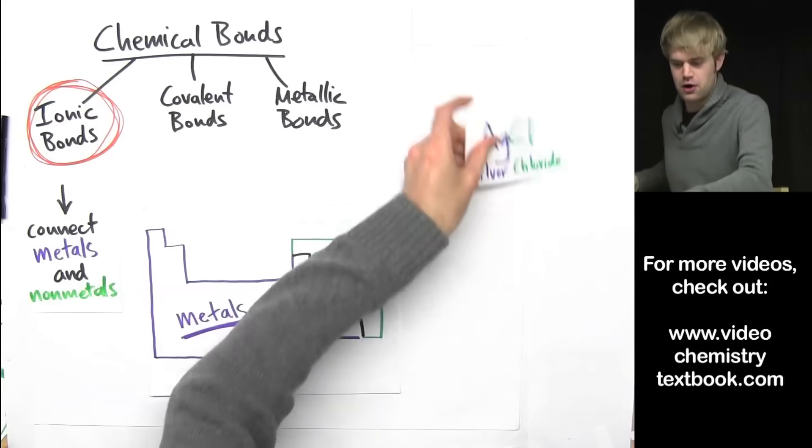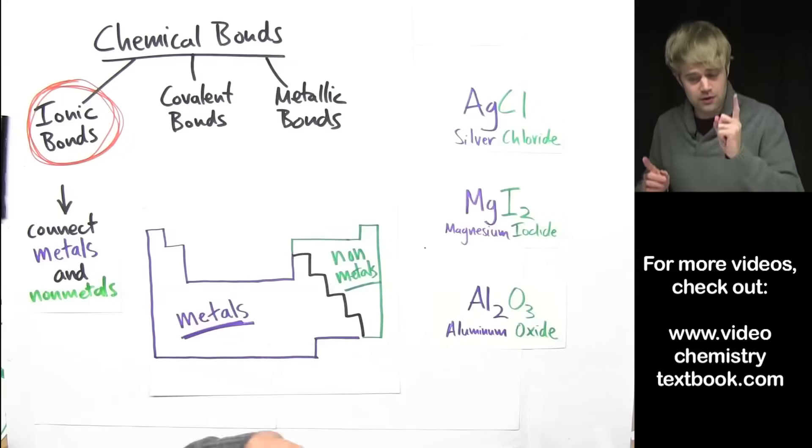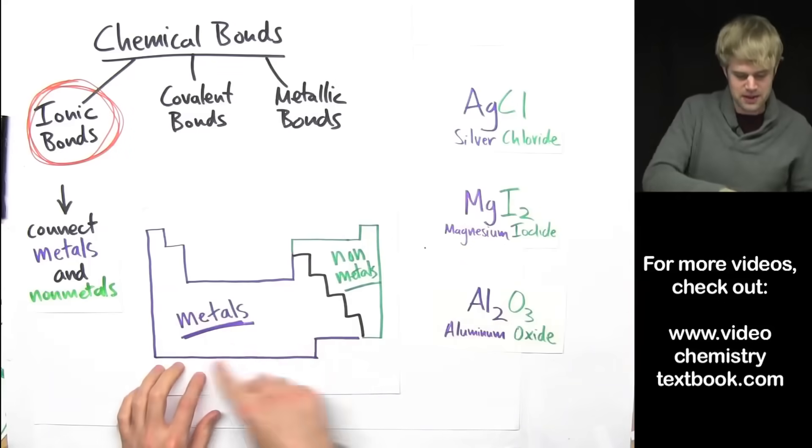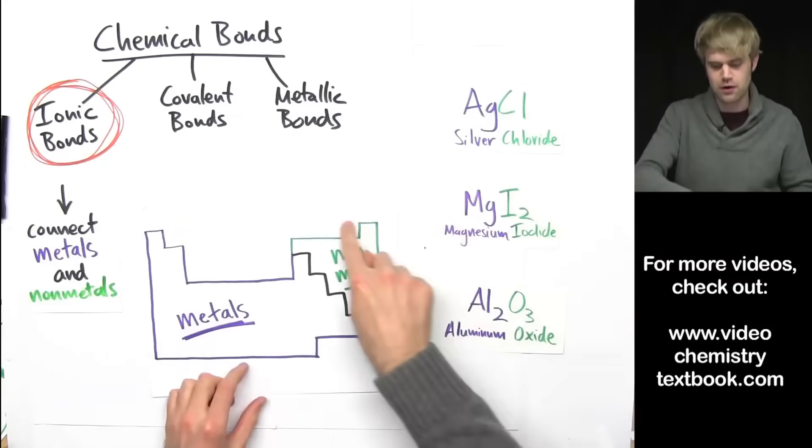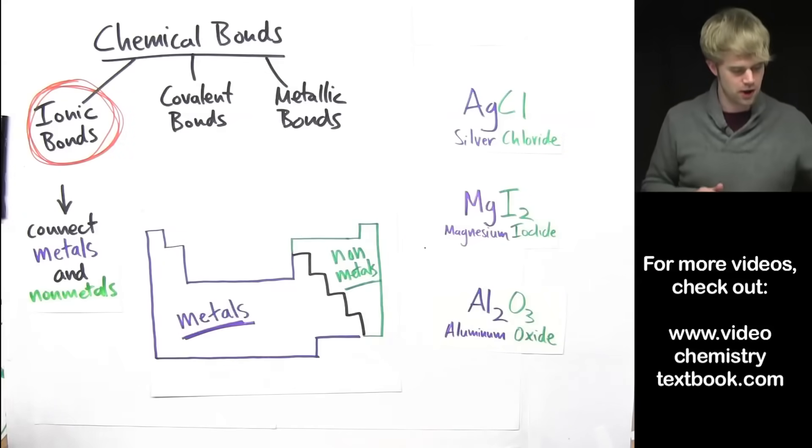Some examples are silver chloride, magnesium iodide, or aluminum oxide. Each one of these chemicals have a metal, this one, this one, or this one from this side of the periodic table, with a nonmetal, this one, this one, or this one from this side. So, ionic bonds and all of these because there are metals and nonmetals connected together.